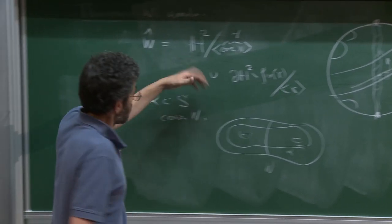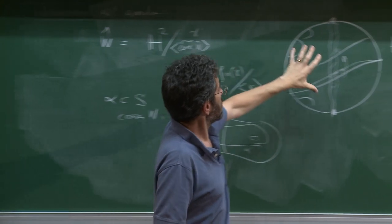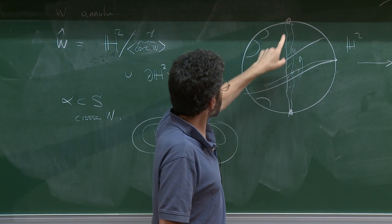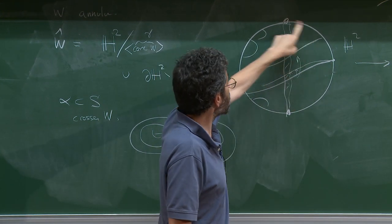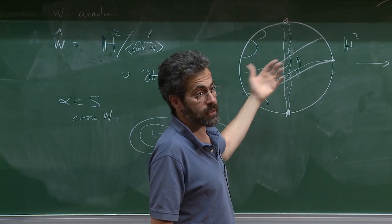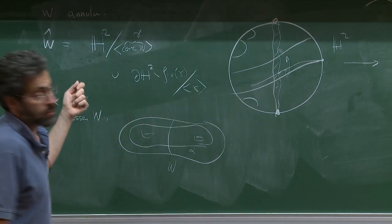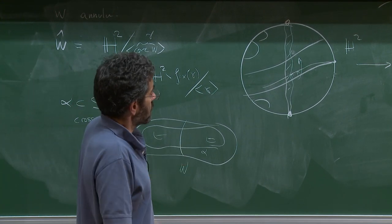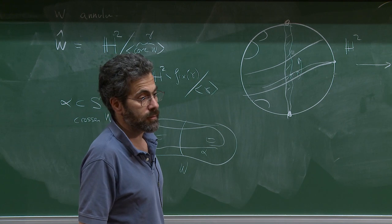Student question about whether this depends on the metric. Reply: In order to give a hyperbolic metric on the surface, I have to choose a metric. So there could have been different ways of writing the universal cover as H², but all of them identify the circle at infinity in the same way — the circle at infinity is canonical. It's naturally identified with the Gromov boundary of the fundamental group, so it doesn't actually affect anything to change the metric. That's a good question.